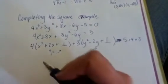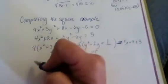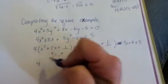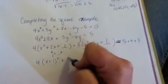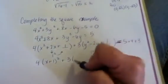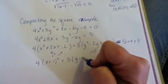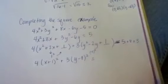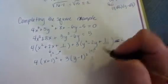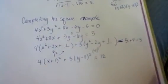So now we have 4 times x plus 1 squared plus 3 times y minus 1 squared equals 9 plus 3, which is 12.